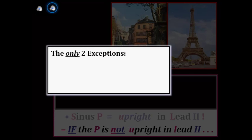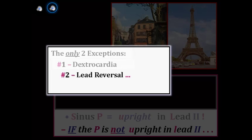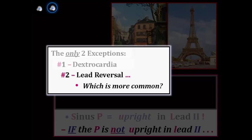The two exceptions are: one, dextrocardia, and two, lead reversal. Even highly experienced technicians may on rare occasion record an ECG with the wrong lead placement. The point to emphasize is the importance of always spending two to three educated seconds focused on lead II to see if an upright P wave with a fixed PR interval is present — because if not, then you don't have a sinus rhythm.